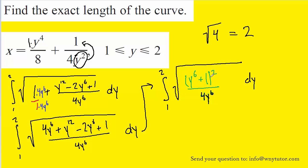So the square root of (y^6 + 1)^2 will just be y^6 + 1, and the square root of 4y^6 will just be 2y^3. So we can rewrite this again and get rid of the square root.